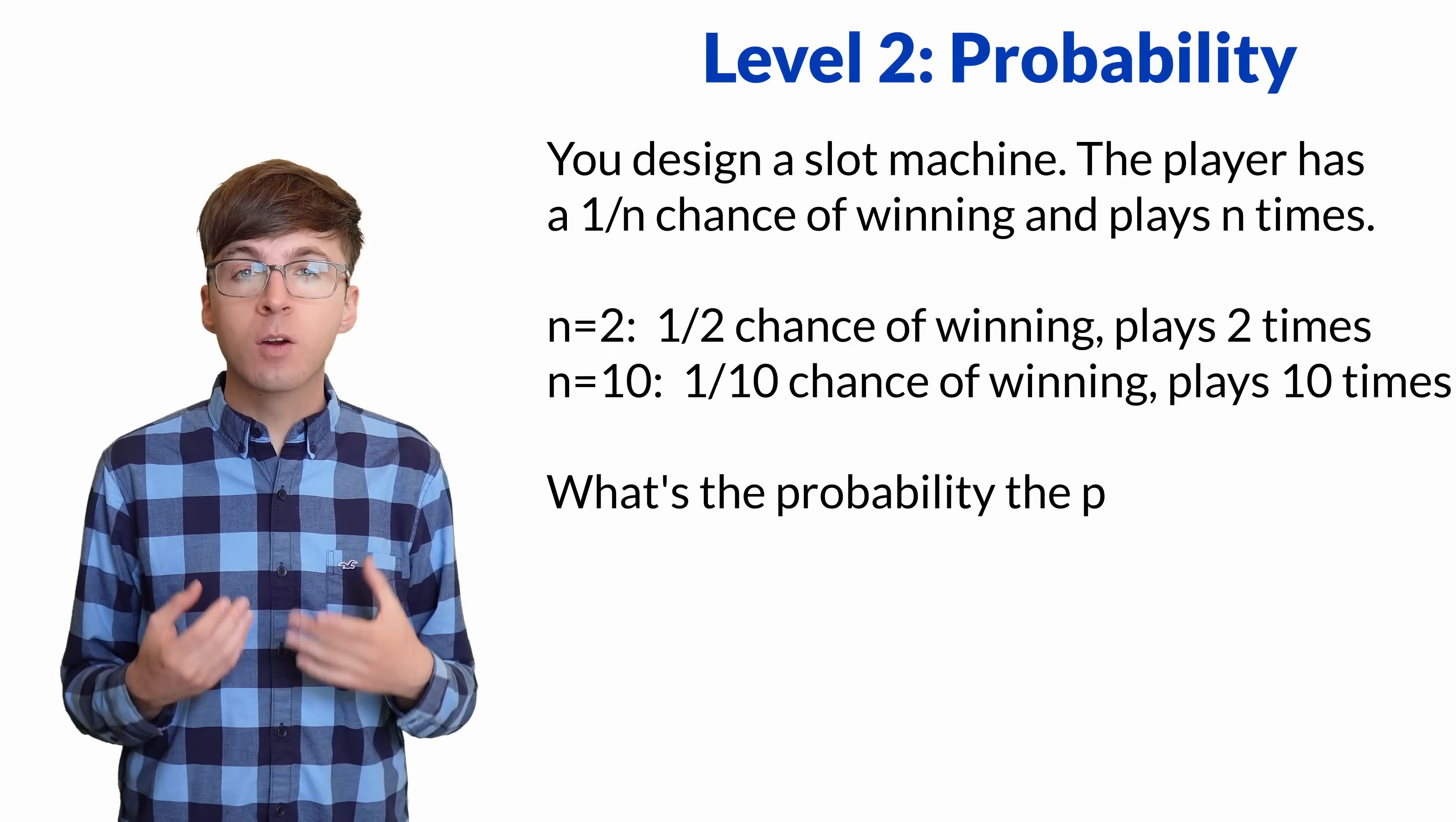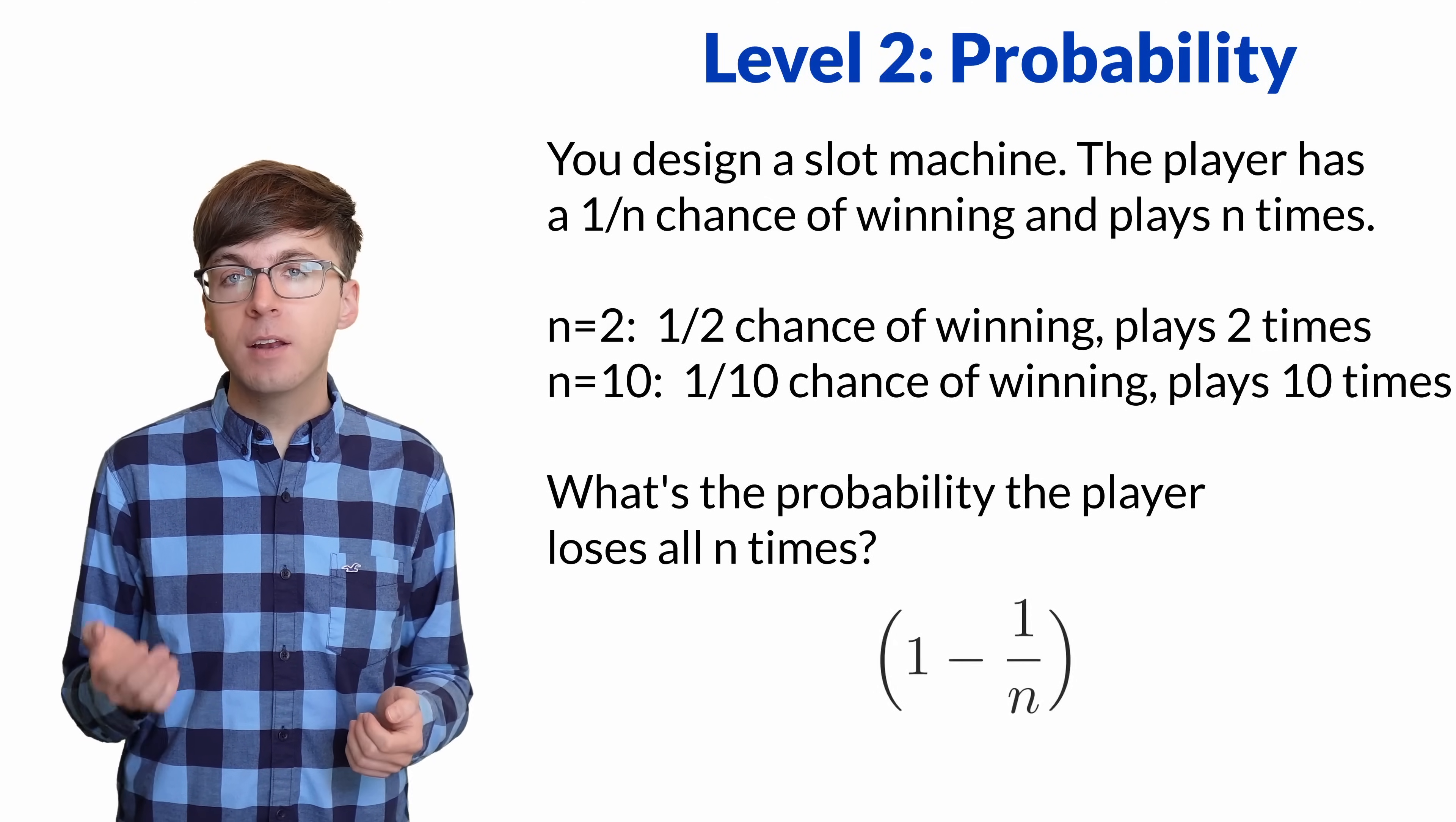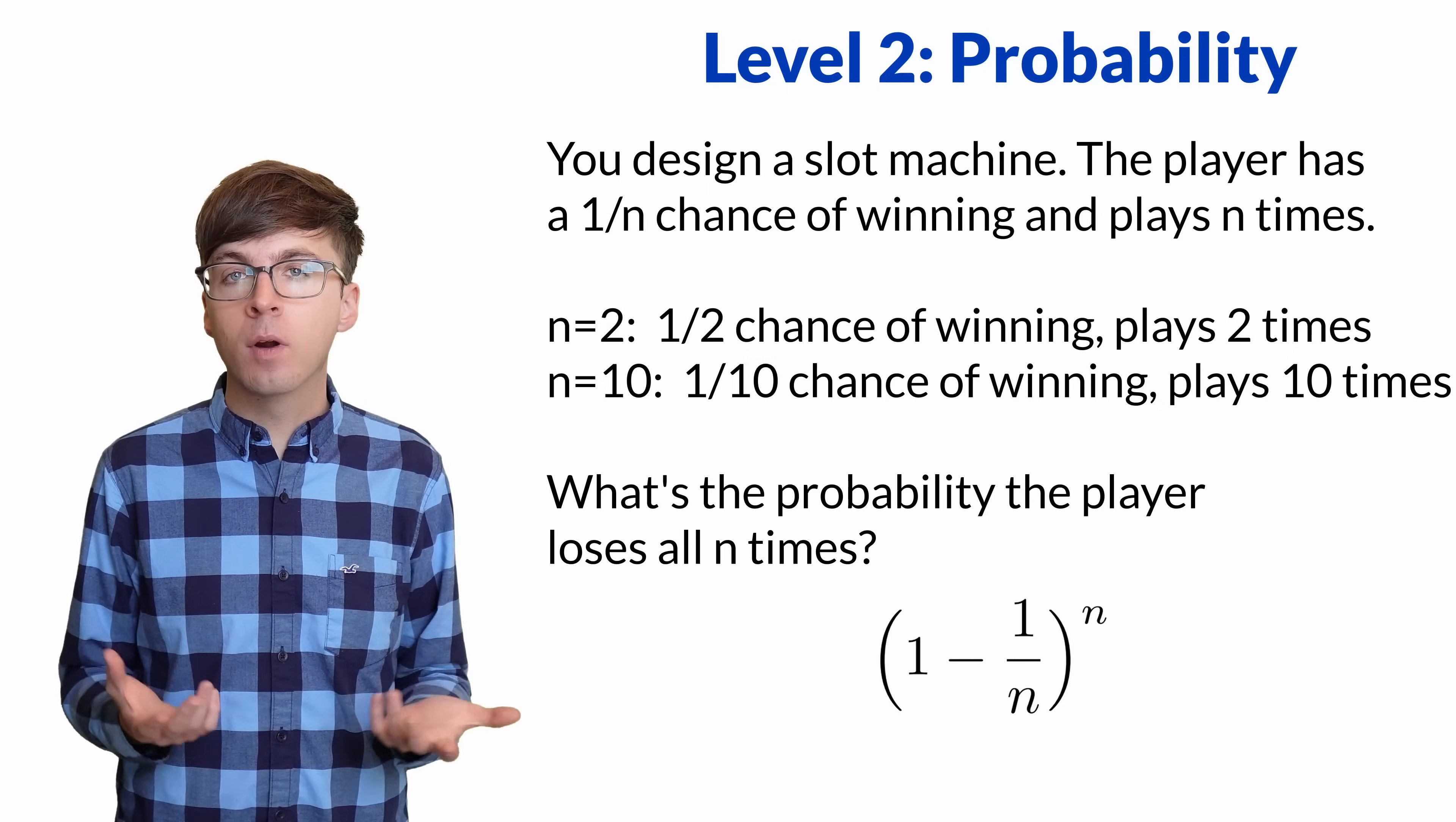But what's the probability the player will lose all n times? Since there's a 1 out of n chance of winning on each attempt, the probability of losing is 1 minus 1 over n. Since the player plays the game n times, and these attempts are independent, we multiply the probability of losing n times to get 1 minus 1 over n to the power n.